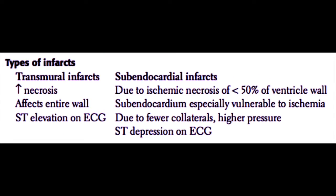Comparing transmural with subendocardial infarcts: transmural infarcts generally involve more necrosis, and the infarct, or death of the myocardial tissue, affects the entire muscular wall from the epicardium to the endocardium. These types of infarctions show ST elevations on the electrocardiogram. Subendocardial infarcts are generally less severe and are due to ischemic necrosis of less than 50% of the ventricular wall, and do not extend to the epicardium. The subendocardium is especially vulnerable to ischemia because the tissue pressure is higher, being right next to the blood chamber of the heart, and there are also fewer collaterals in the subendocardial region. Subendocardial infarctions will show ST depressions on the electrocardiogram.